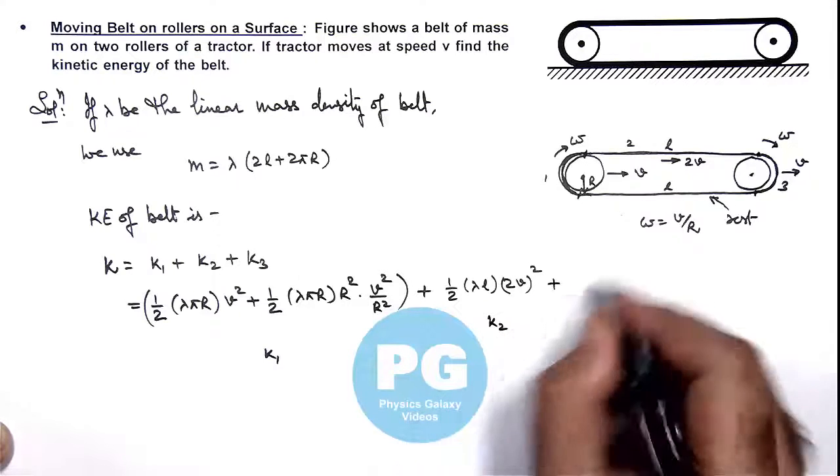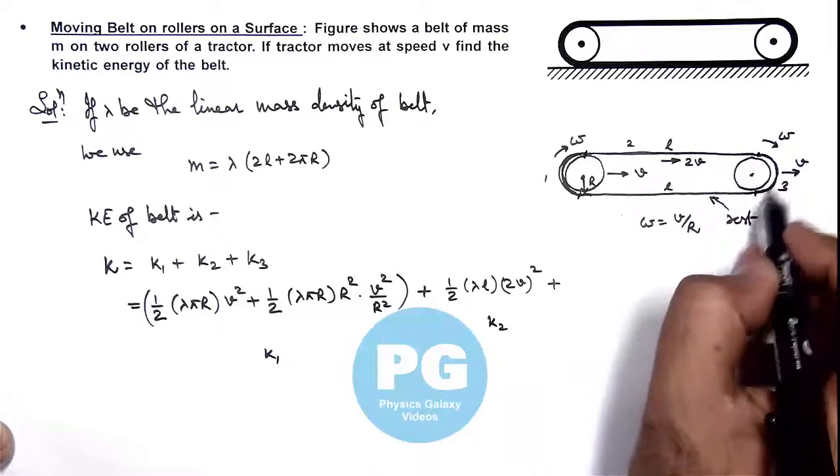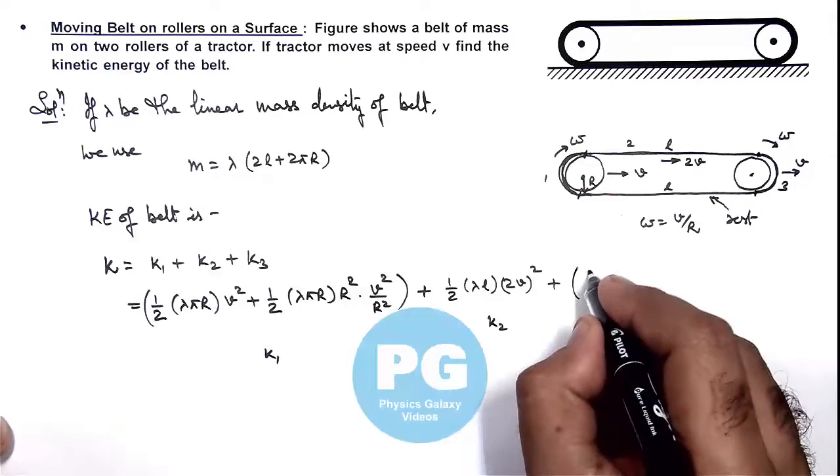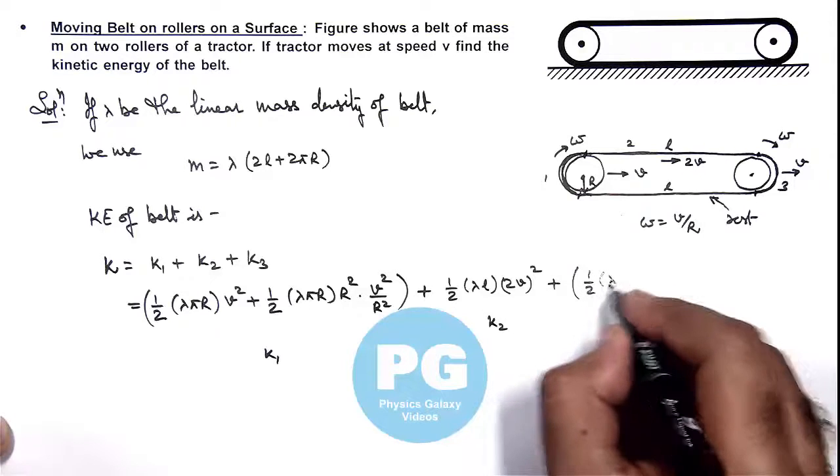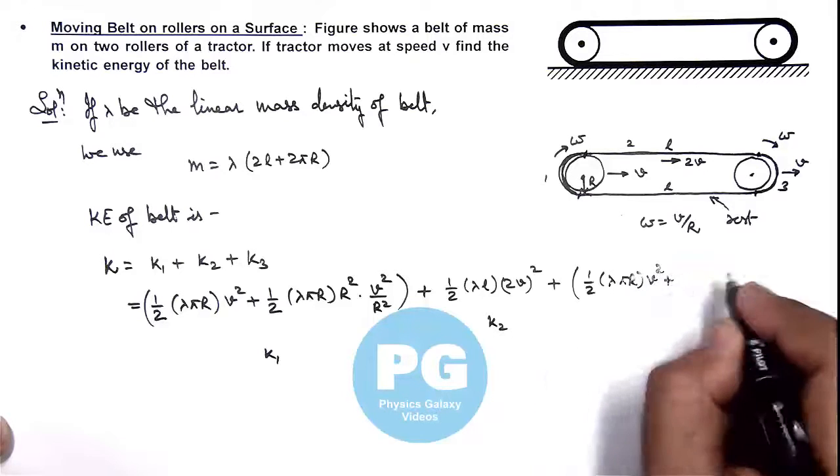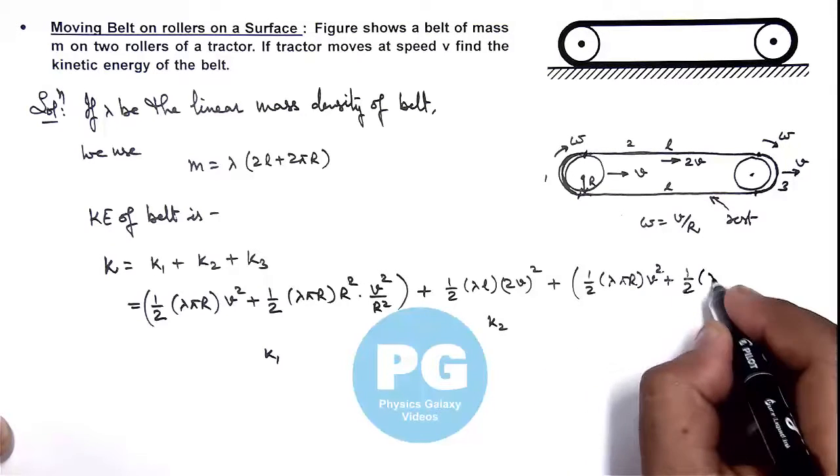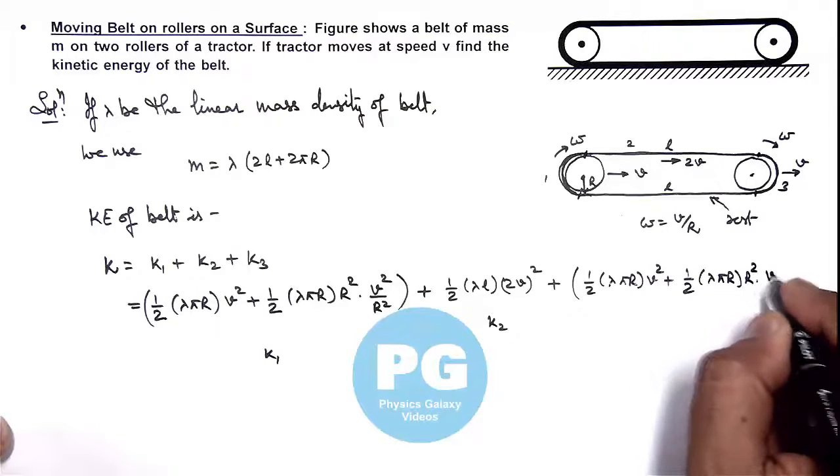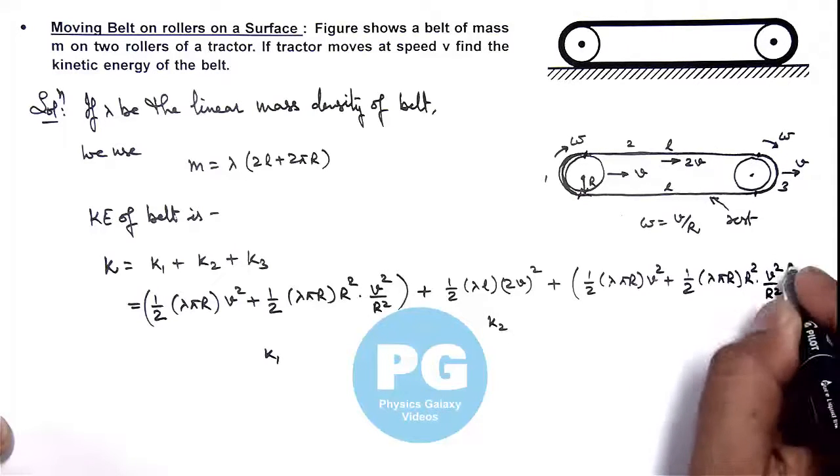Plus the value of K3, which is again half a ring-shaped belt, so this remains the same. We can write as half λπr multiplied by v squared plus half λπr multiplied by r squared multiplied by v squared by r squared.